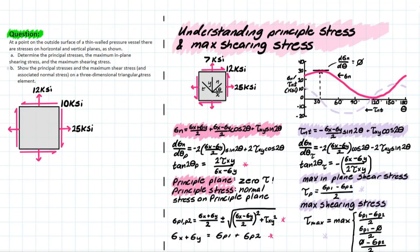Let's read the problem first, see what it's about, and then go back to the theory, talk through it quickly, and then solve the problem. The problem goes: at a point on the outside surface of a thin-walled pressure vessel, there are stresses on the horizontal and vertical planes as shown. Determine the principal stresses, the max in-plane shearing stress, and the maximum shearing stress — shown on a three-dimensional triangular stress element.